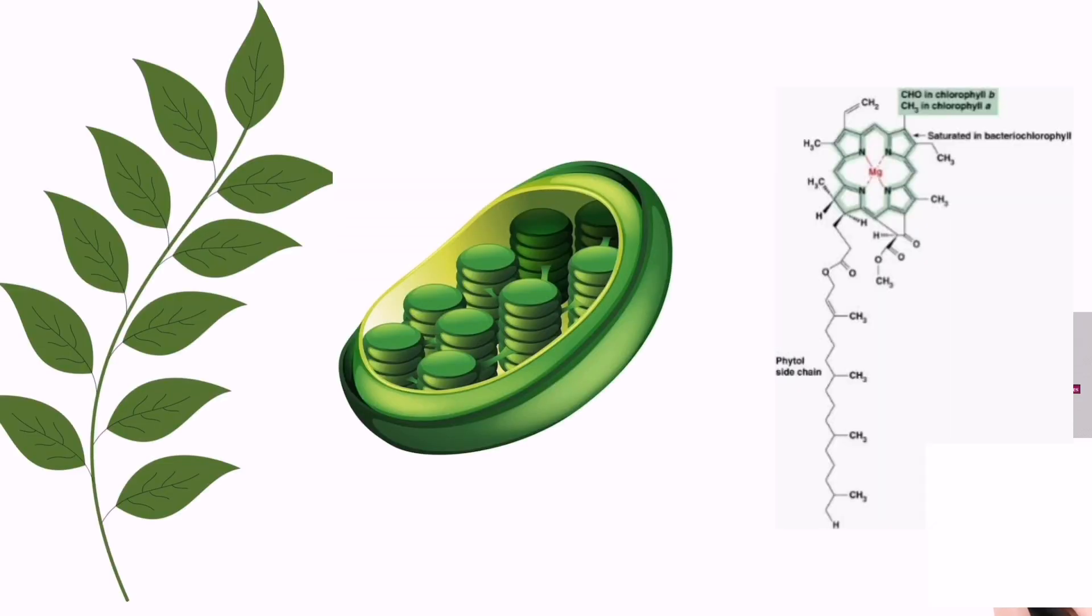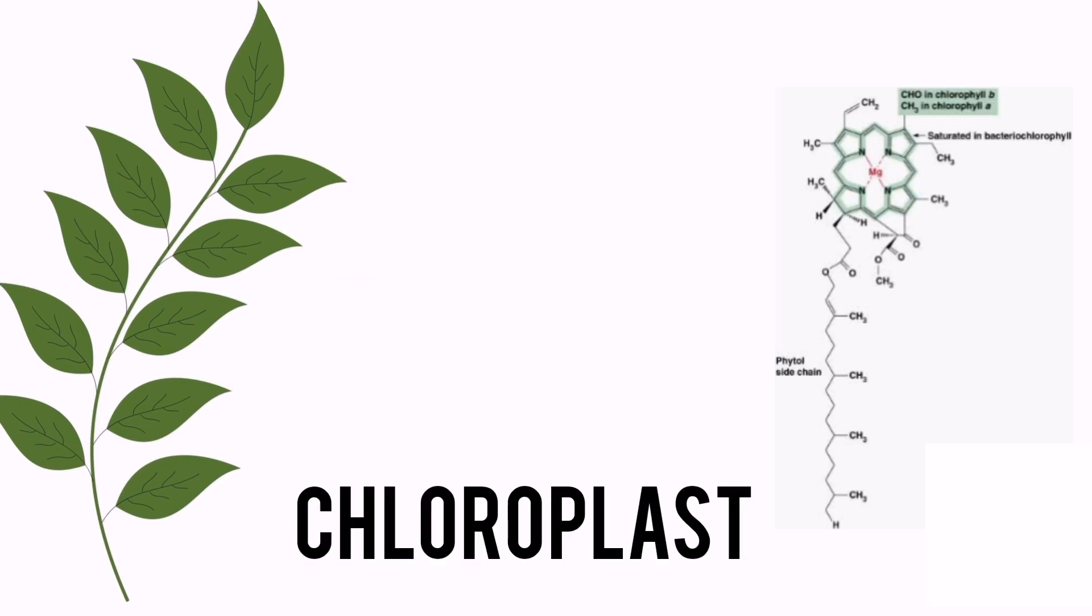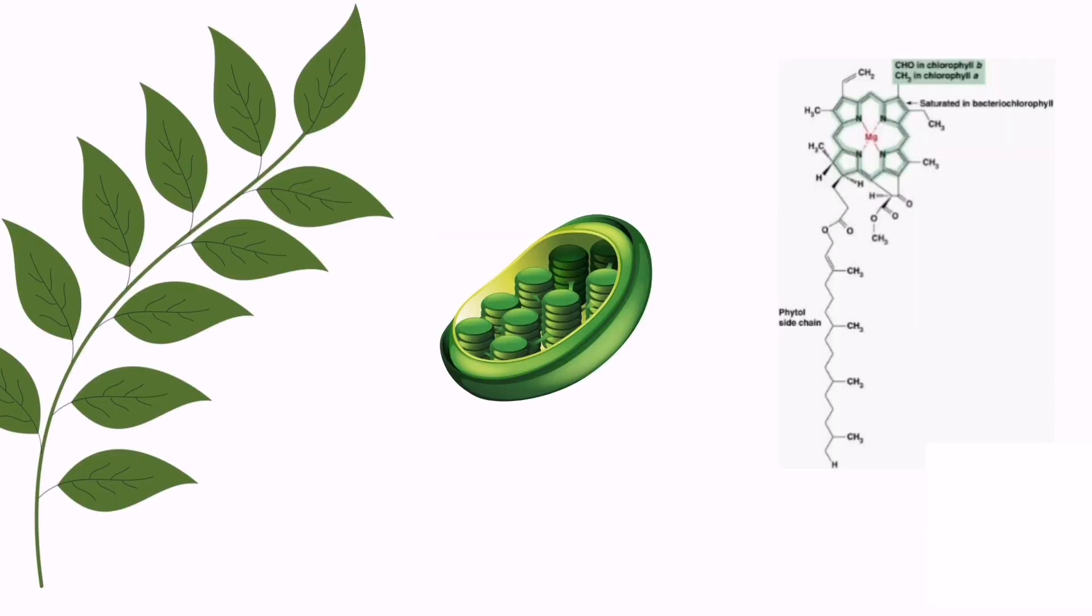Chlorophyll is responsible for the green color of many plants and algae. Seen through a microscope, chlorophyll is concentrated within organisms in structures called chloroplasts.